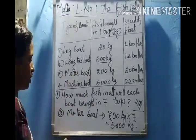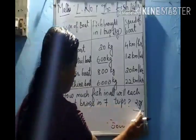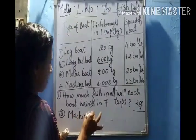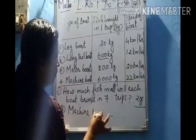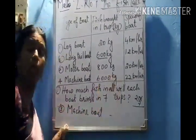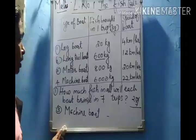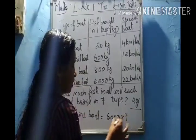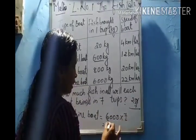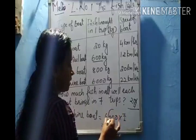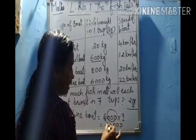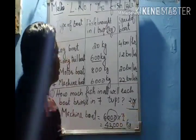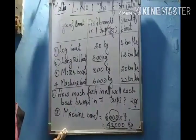And the last one — the machine boat. The machine boat brings six thousand kilograms of fish in one trip. So in seven trips: six thousand multiplied by seven. Six sevens are forty-two. How many zeroes do you add? Three zeroes. That means forty-two thousand kilograms of fish will be brought by the machine boat in seven trips.